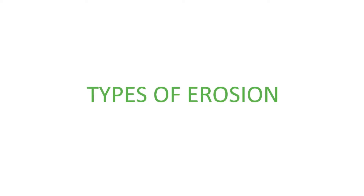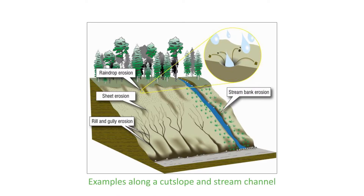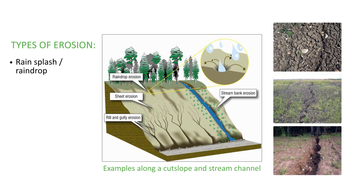Types of erosion. Erosion is caused by rain, moving water, wind or gravity displacing soil, loose rock or dissolved portion of rock. Five common types of water-caused erosion are identified in this figure. Rain splash or raindrop erosion: soil particles are dislodged and moved by the force of raindrops. The amount of erosion depends on the duration and intensity of the rain, the transfer of the raindrops' kinetic energy to the soil and the structure of the soil itself. As soil particles become dislodged, they are vulnerable to movement in a process called sheet erosion.